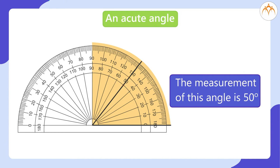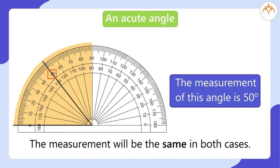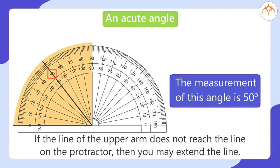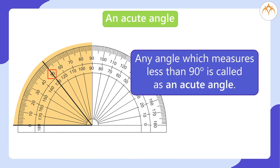The arm of the angle aligned to the baseline extends towards the left side, so you can also read the measurement from the left side of the midline of the protractor. The measurement will be the same in both cases. If the line of the upper arm does not reach the line on the protractor, you may extend the line. Remember, the measurement of the angle does not change even if you extend the line. Any angle which measures less than 90 degrees is called an acute angle — it is always on the right side of 90 degrees.